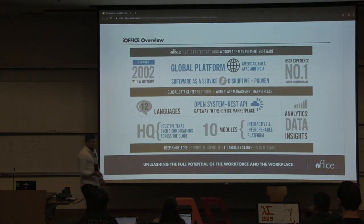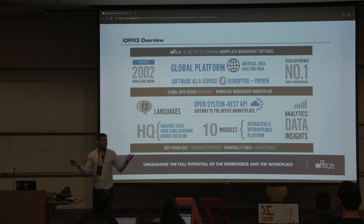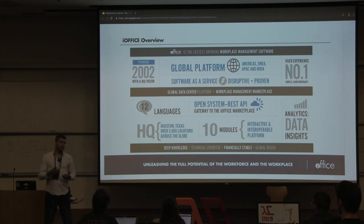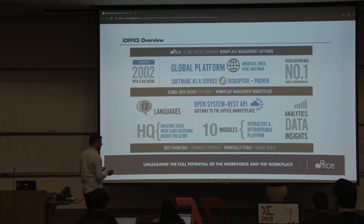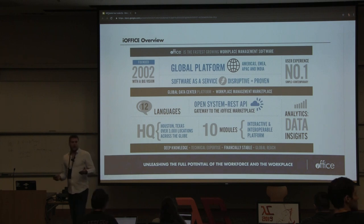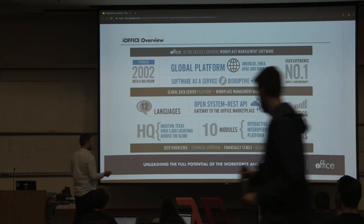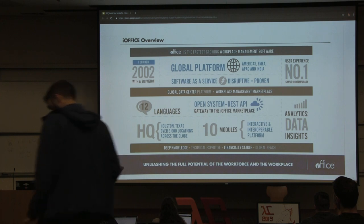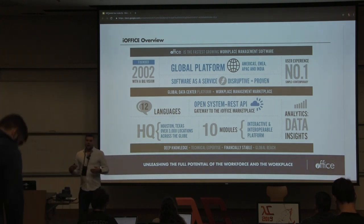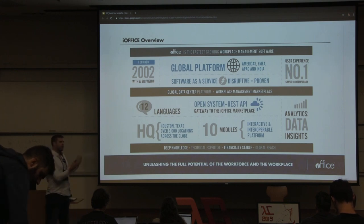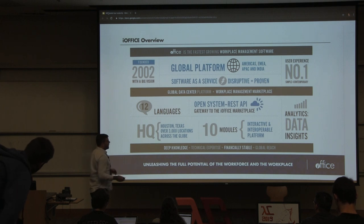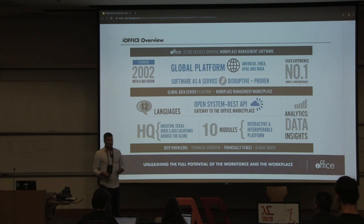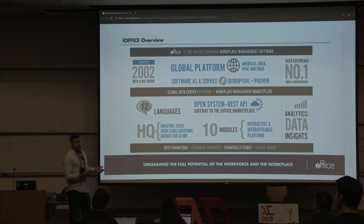iOffice is a facility management software platform. Big companies with massive buildings use us to manage their floors, inventory, and where people sit — that's the traditional workplace management offering. We layer on top of that mobile applications for the employee experience. This lends itself to a service-oriented architecture, and over the last five years we've migrated from a Java monolith to a service-oriented architecture that's about 80% Scala. Over the last two years we started the journey from using Scala as a better Java to more pure functional Scala.